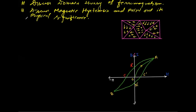Hi students, today we are going to discuss the domain theory of ferromagnetism as well as the hysteresis loop and the major significance of this hysteresis cycle. Previously, we already discussed diamagnetic material, paramagnetic material, and ferromagnetic material and their properties. Here we will focus on ferromagnetic material and the related domain theory.